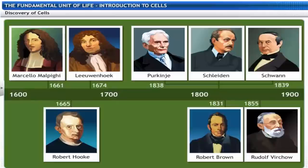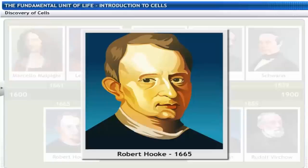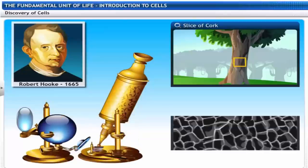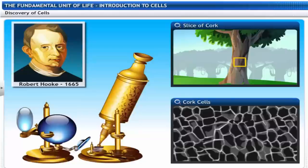In 1665, Robert Hooke, an English scientist, looked at a thin slice of cork through a compound microscope. He observed many tiny, hollow, room-like structures that resembled a honeycomb and called them cells.